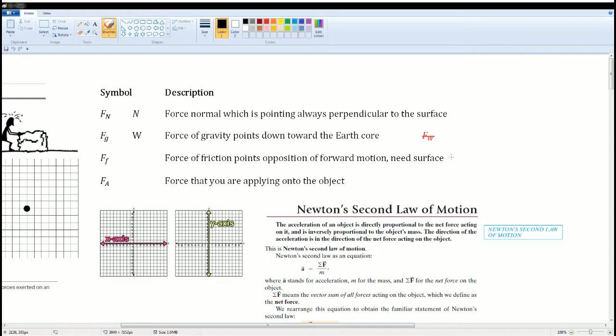F_G or a big W is the force of gravity that always points down towards the Earth's core. You should never use F with subscript W. Then F with a subscript of lowercase f, which is the force of friction pointing opposite of the forward motion, and you will always need a surface.